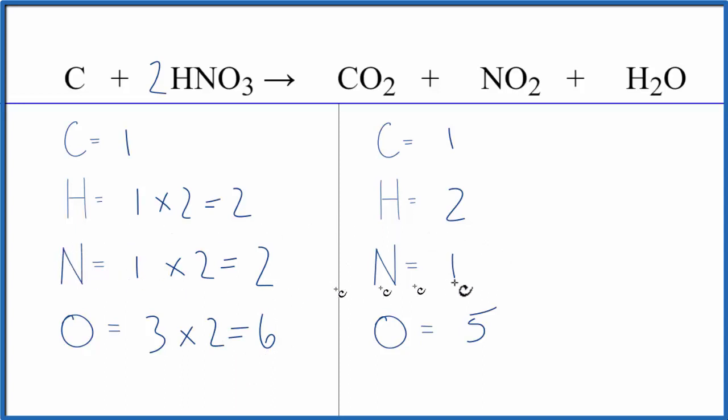Might as well try to balance the nitrogens, see what happens there. Put a two as our coefficient. One times two, that equals two. Those are balanced. Now let's recalculate our oxygens. We have two plus two times two is four. So two plus four is six, plus one, seven oxygen atoms.